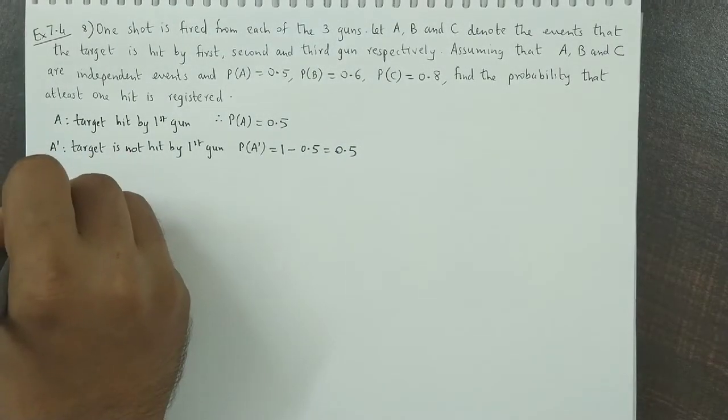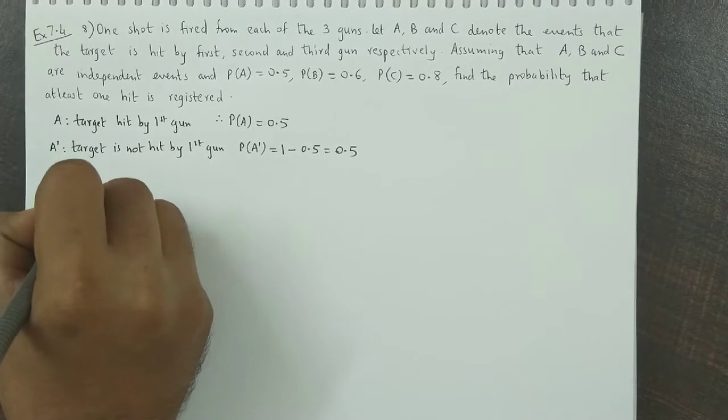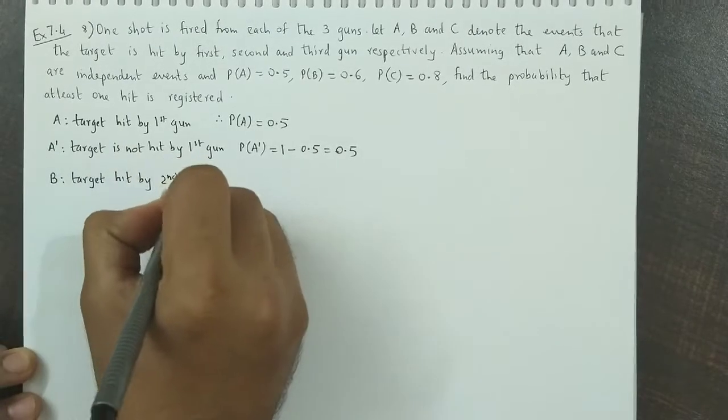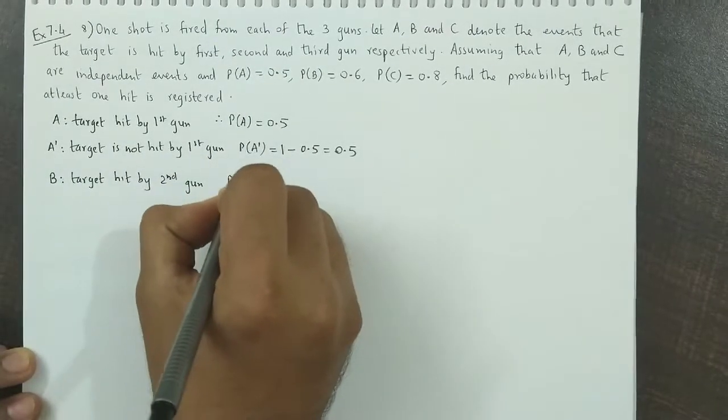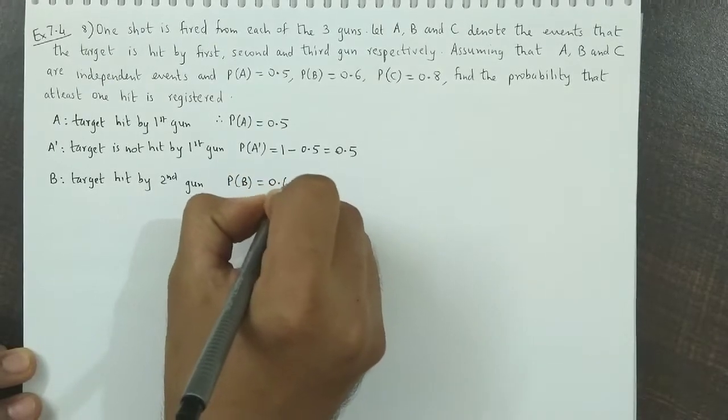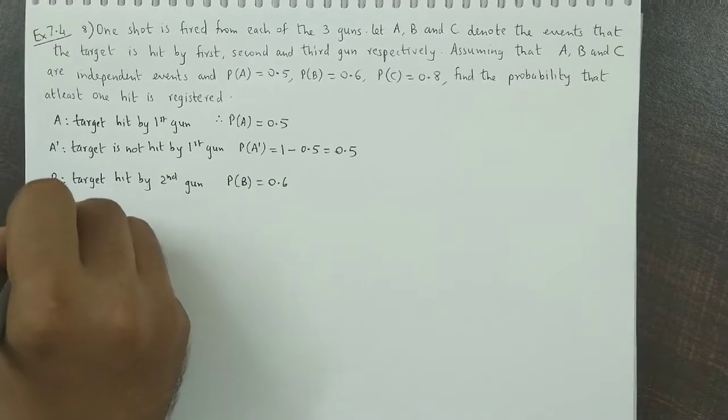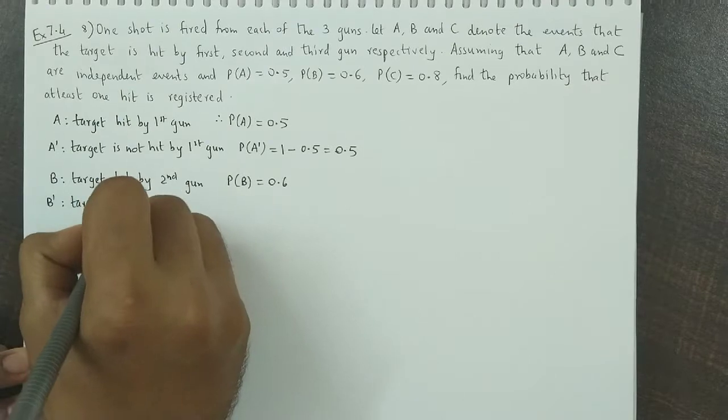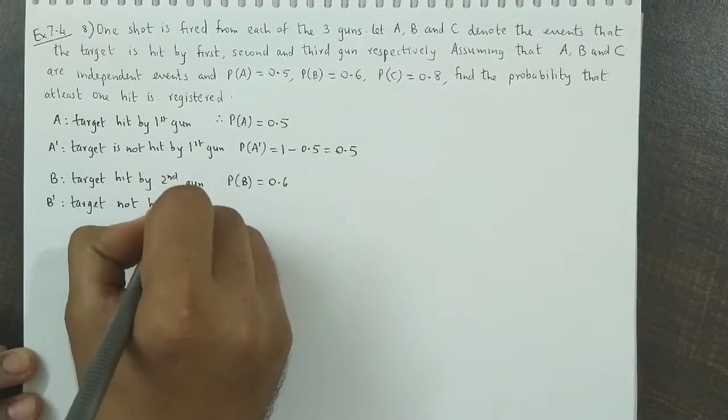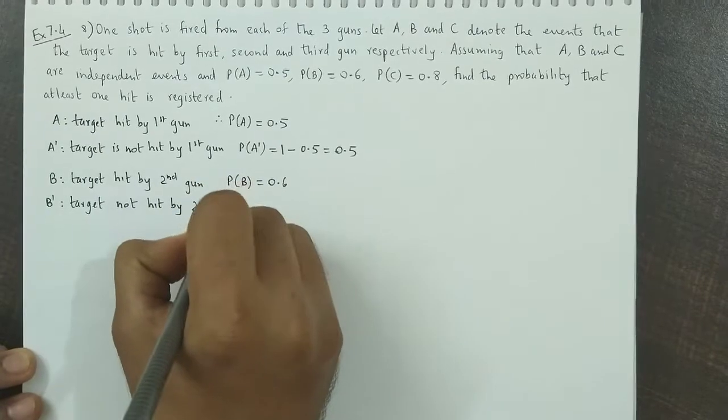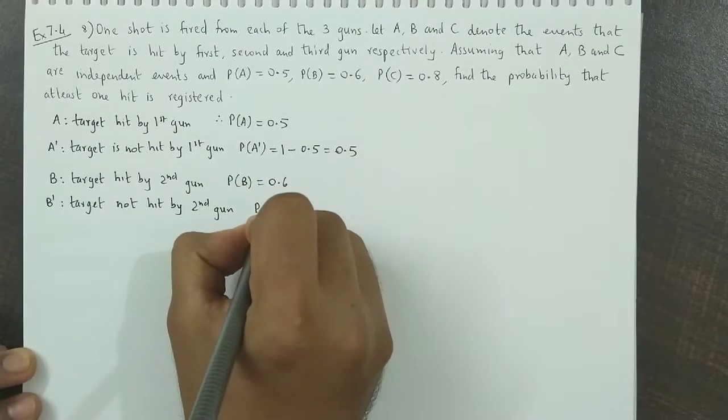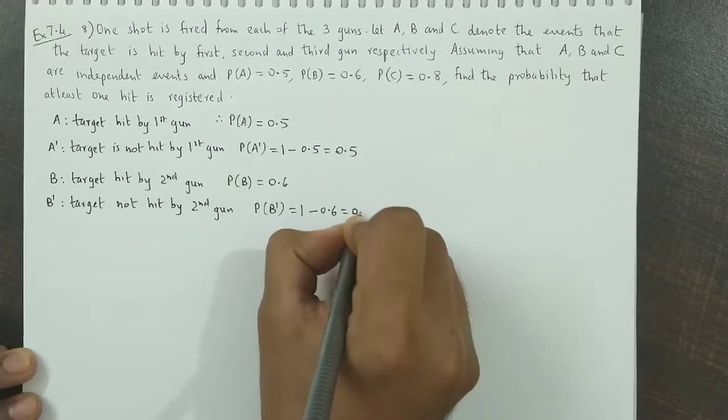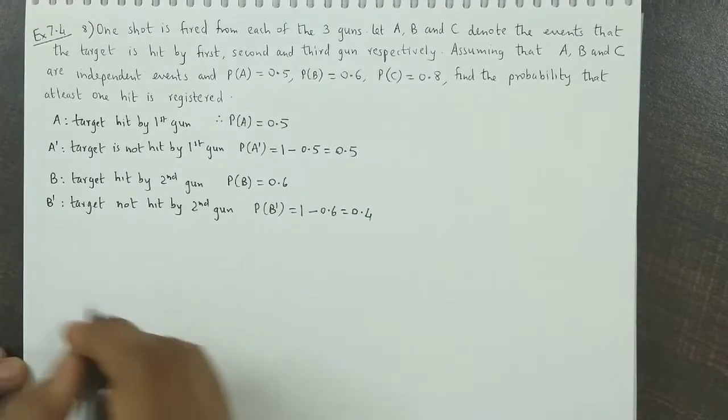Similarly, B is the event that the target is hit by the second gun. So P of B complement, the target is not hit by the second gun, will be 1 minus P(B), which equals 0.4.